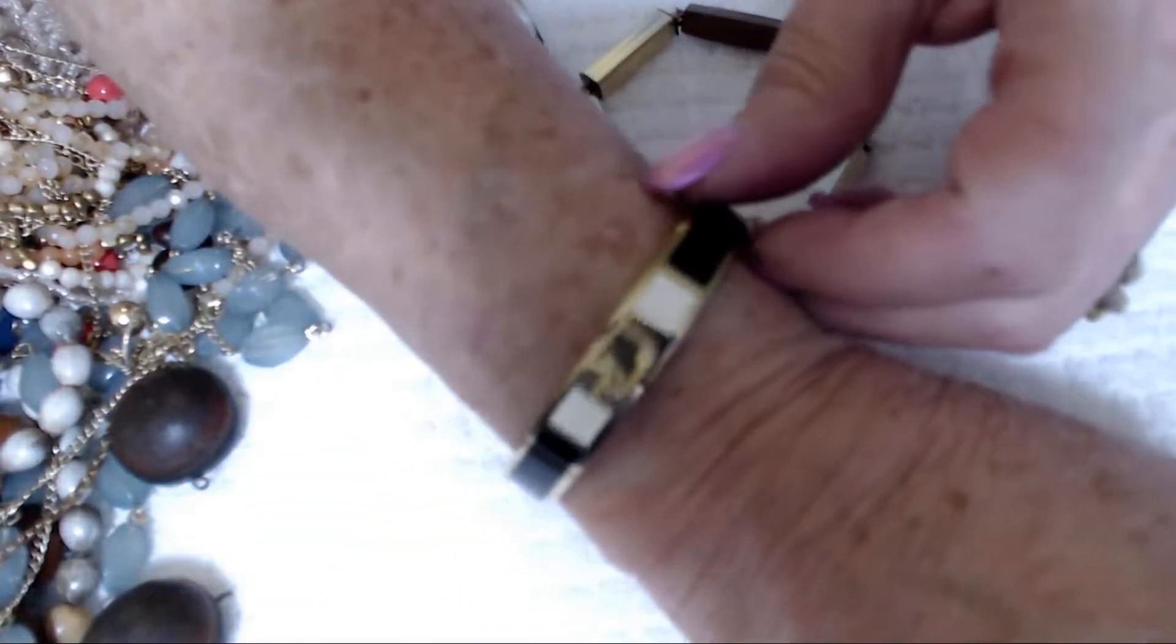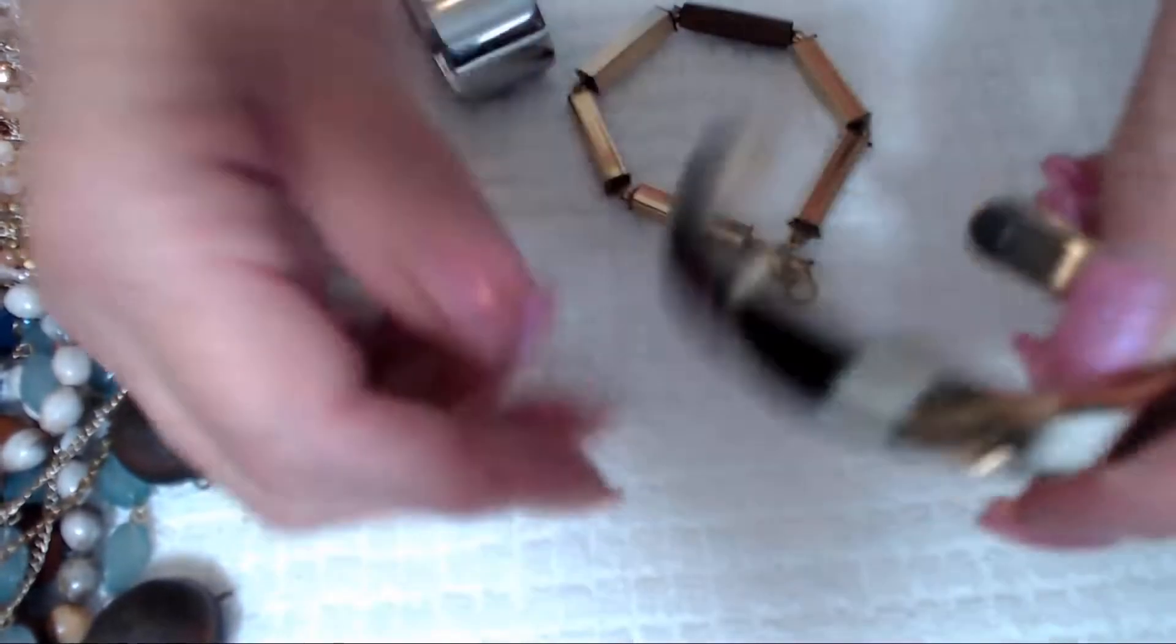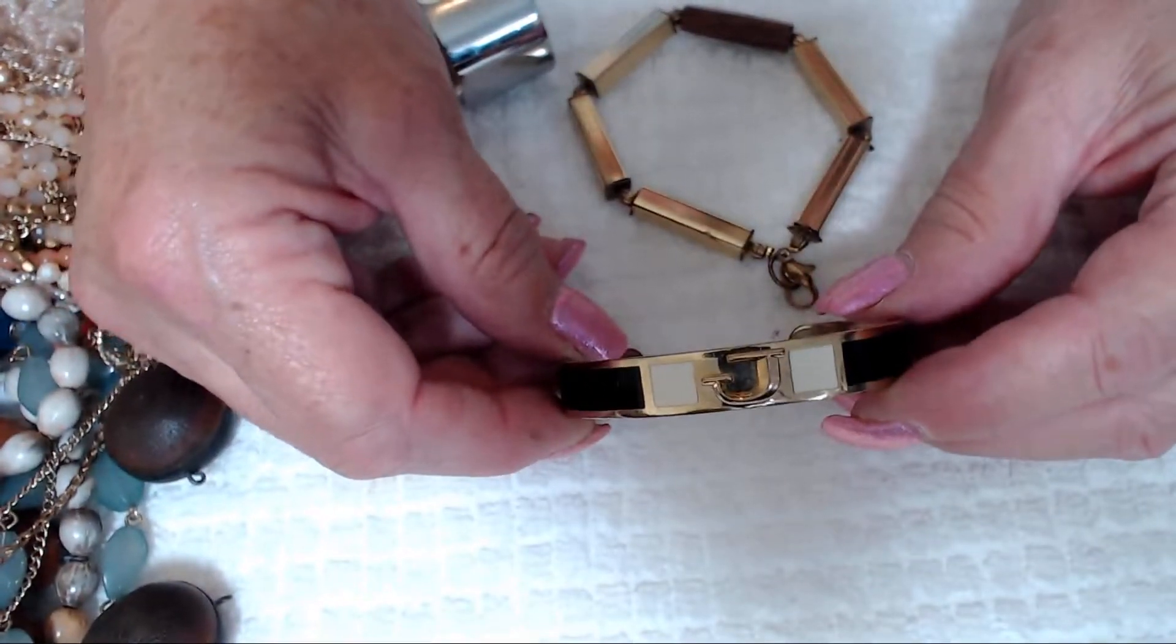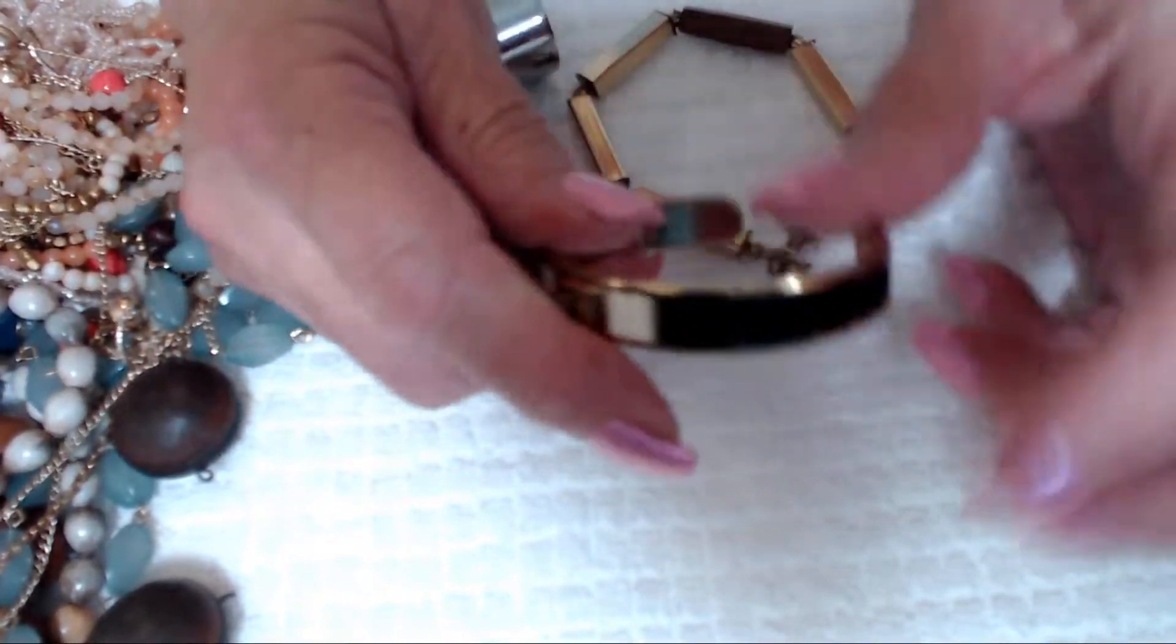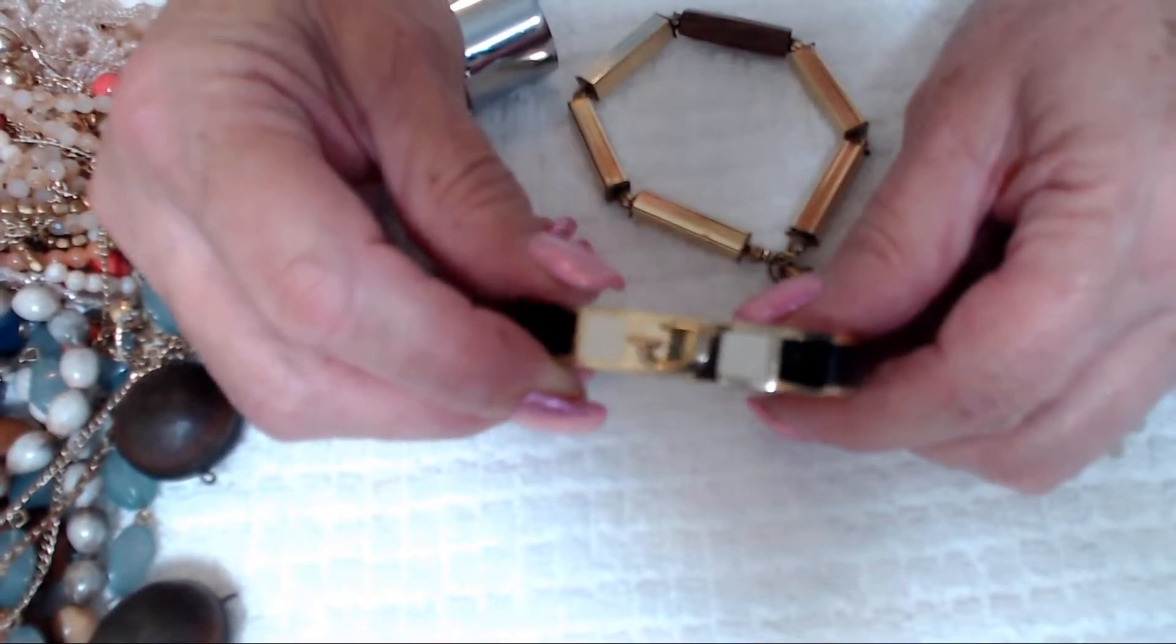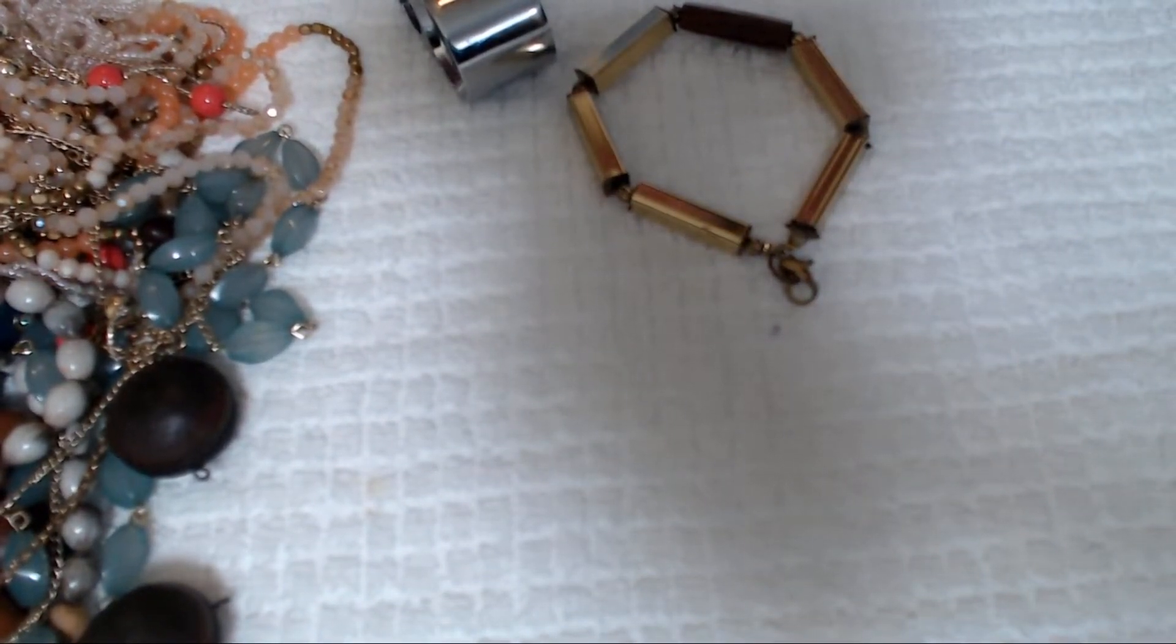It's inlaid enamel. Gorgeous bracelet, though. Really cute. It fits me really well. Very cute, though. So that has a J on it, so I may have to send that one to my sister Jackie. That's a decent piece.